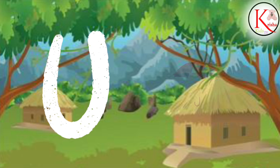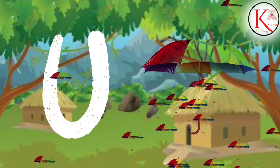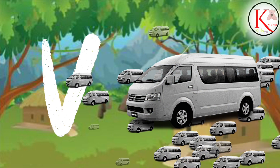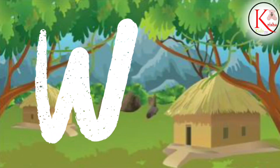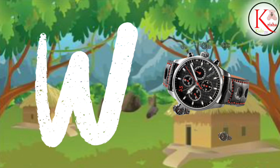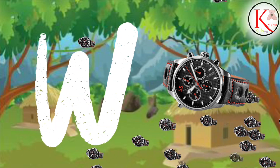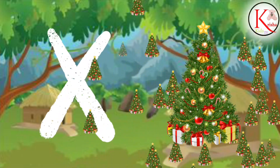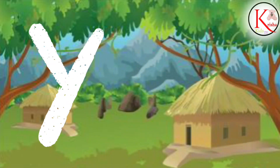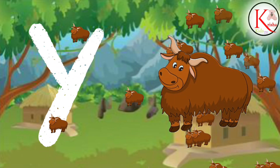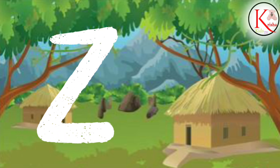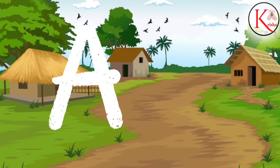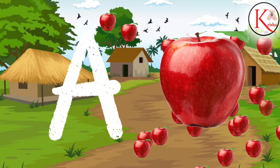U for Umbrella. V for Van. W for Watch. X for X-ray. Y for Yak. Z for Zebra.